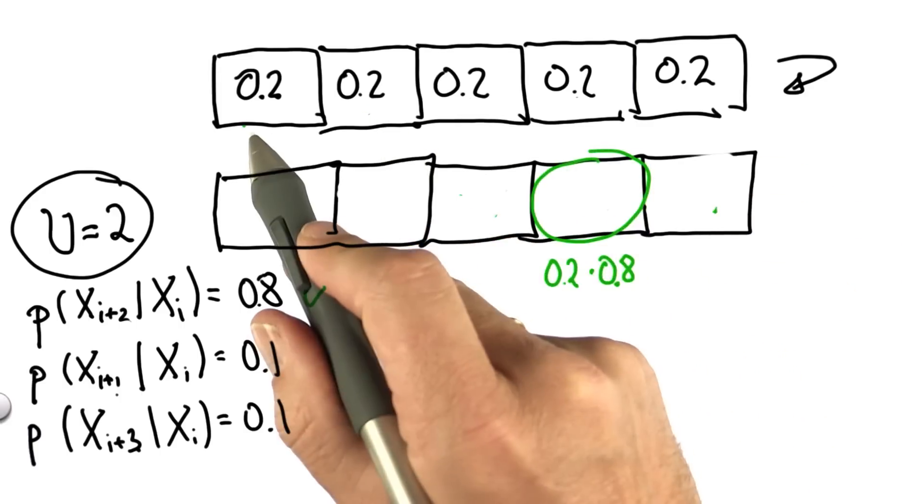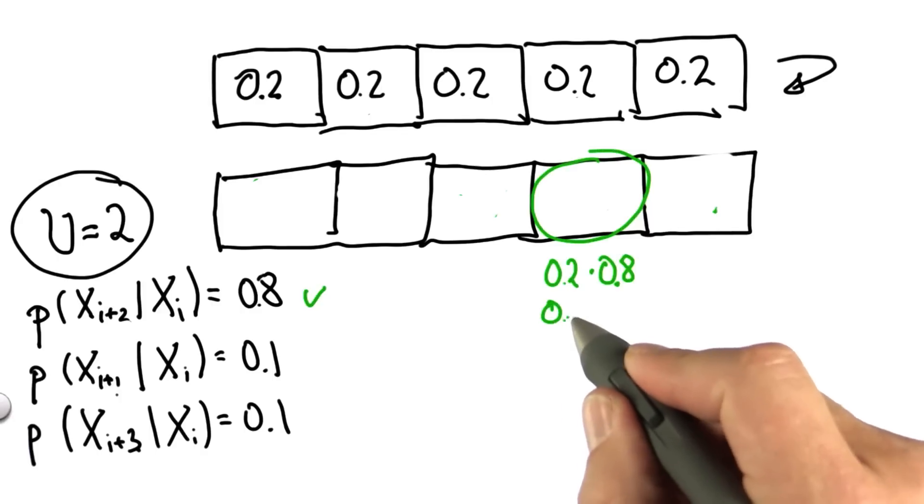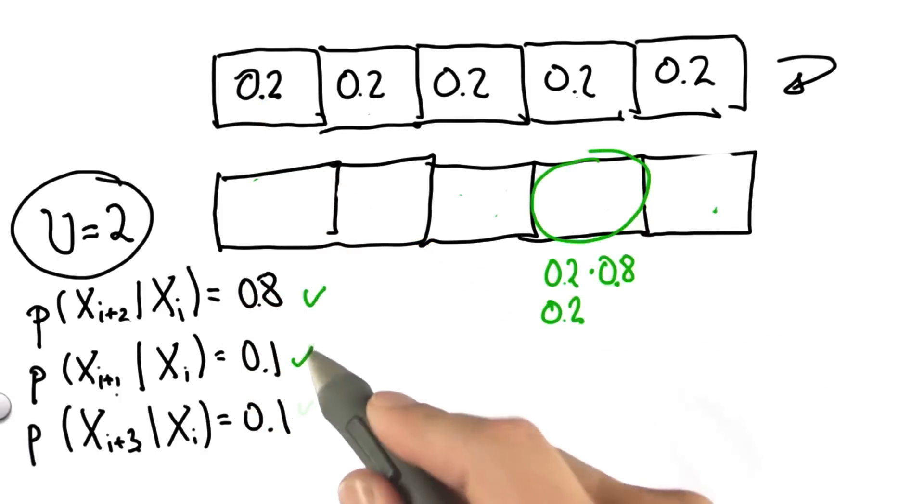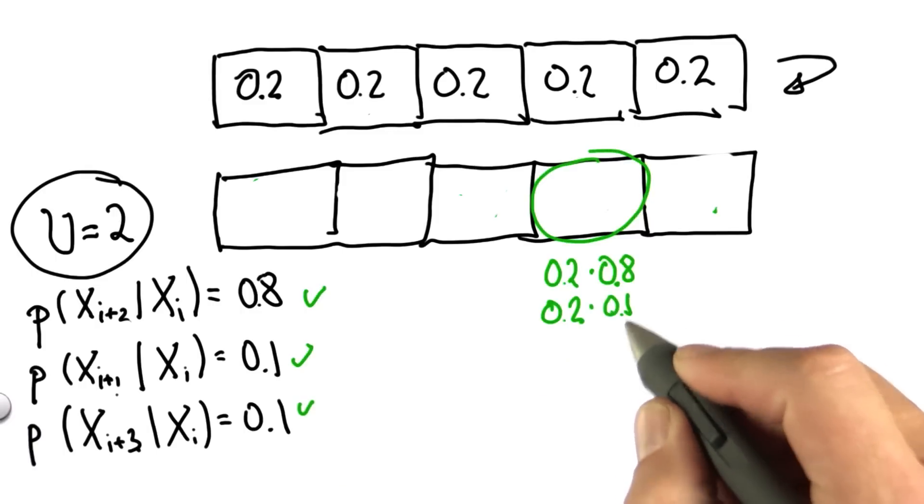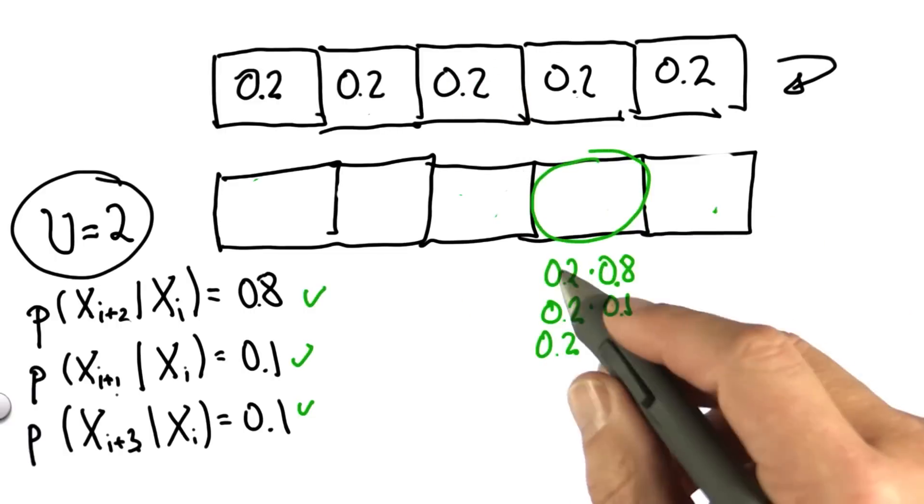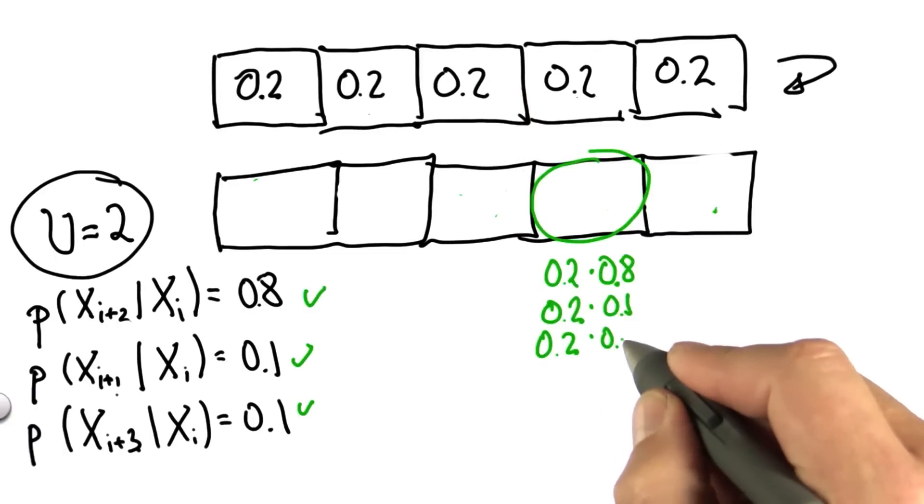Perhaps we started in x1 and we overshot, which gives us a 0.2 for the cell x1 times a 0.1 for overshooting. Or perhaps we started in x3 and we undershot, which gives us 0.2 times 0.1.